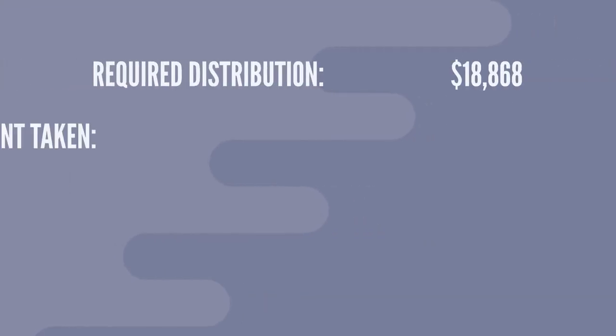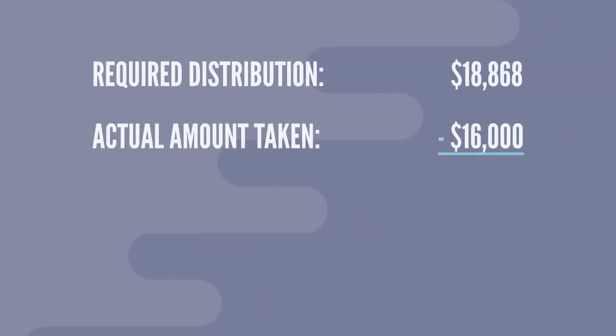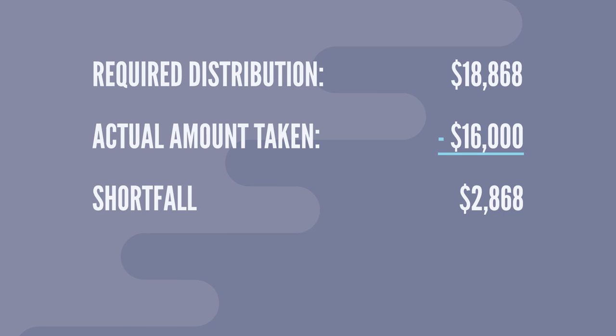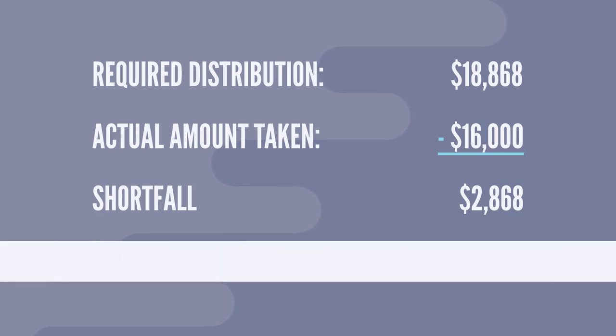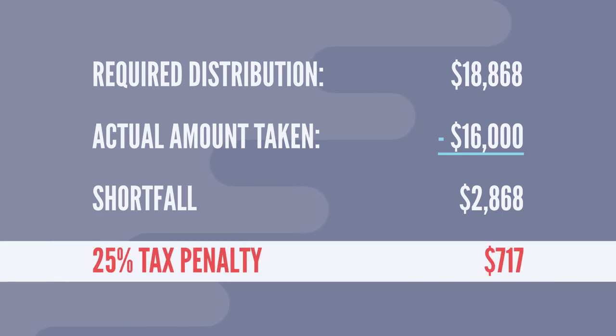But remember, if Alice takes less than her required minimum distribution in any given year, she'll owe a tax penalty of 25% on the difference between her required distribution and her actual distribution.